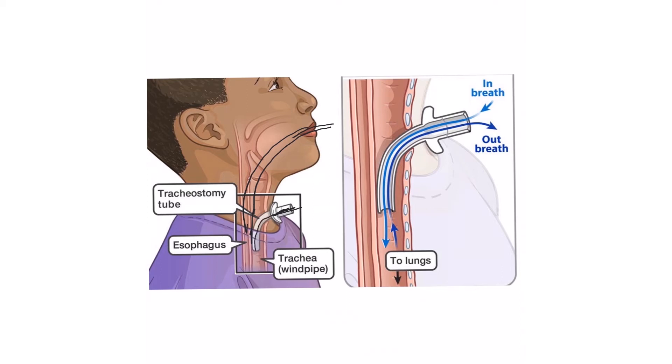At the same location where the ET tube sits, instead of connecting the ventilator to the tube in the mouth, we connect it directly in the neck. Even before we go into the advantages and talk about it, you can guess the advantages of having a tube in the neck not in the mouth.